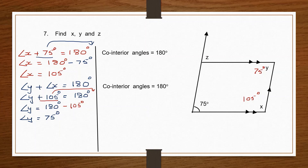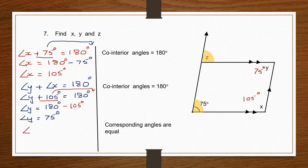Now let's find angle Z. Angle Z and 75 degrees are corresponding angles, and corresponding angles are equal. Therefore angle Z is equal to 75 degrees. We have now found the values of all angles.